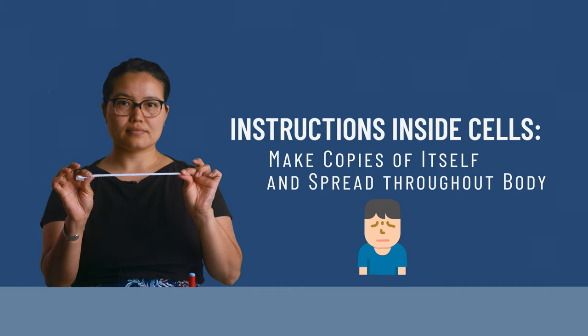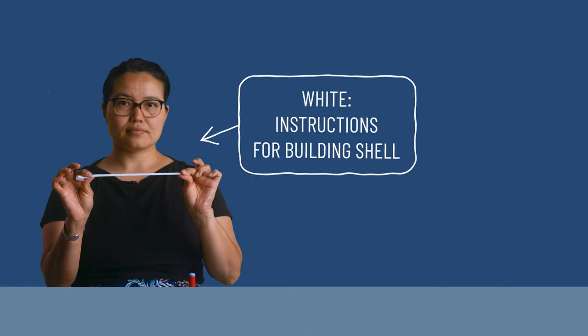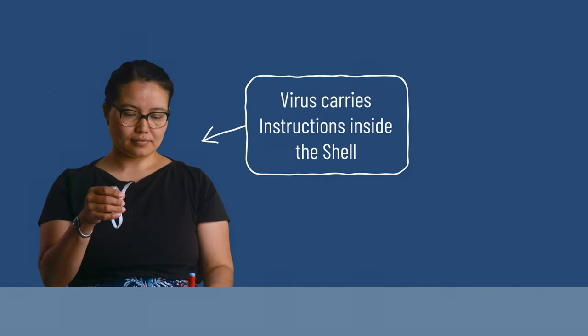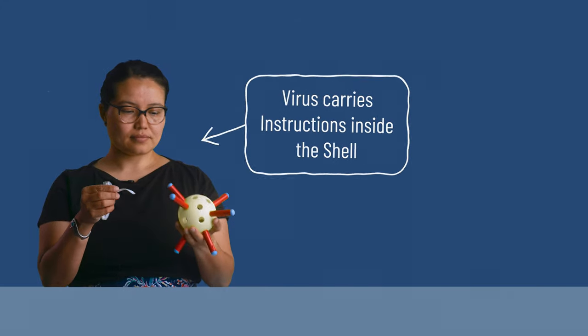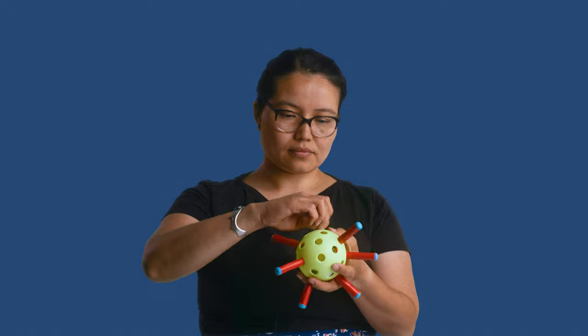The last important part of the virus is the instructions. The instructions tell how to make more copies of itself once it's inside of your cells. Then it can spread throughout your body and make you sick. In our pretend virus, the white part of the shoelace is the instructions for building the virus. The virus carries the instructions inside the shell, so let's tuck the shoelace in. Now that we've built a virus, let's see how we make a vaccine.